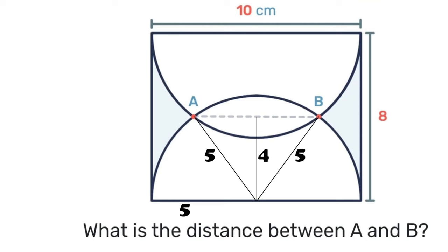Now we want to find the distance from A to B so we're going to use the right angle triangle to find the value X and once X is found then we're going to double it to find the value which is from A to B.